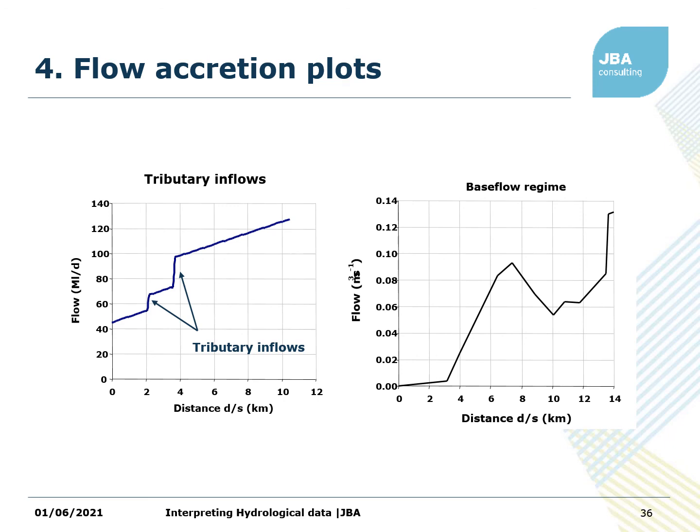These are examples of flow accretion plots. You look at the flow and how it changes as you go downstream — zero is the upper end of the catchment. As you go downstream, you'd expect flow to increase, and it might step up if you've got a tributary inflow. In a catchment with a large base flow regime, it might actually decrease as you go downstream if you switch from a situation where base flow is supporting the river to one where the river is losing water to base flow.